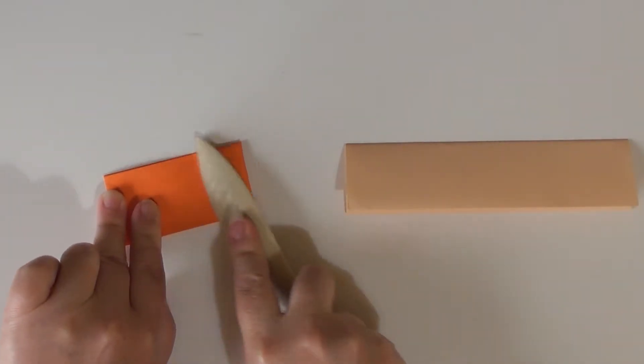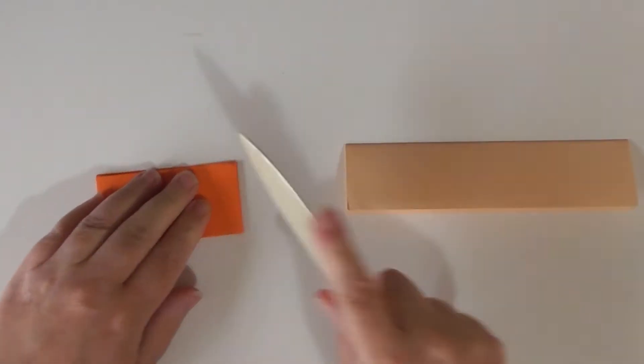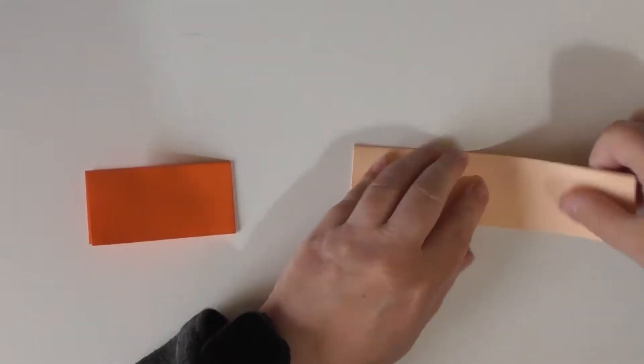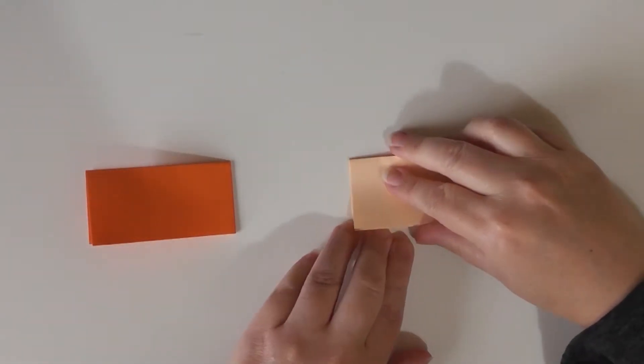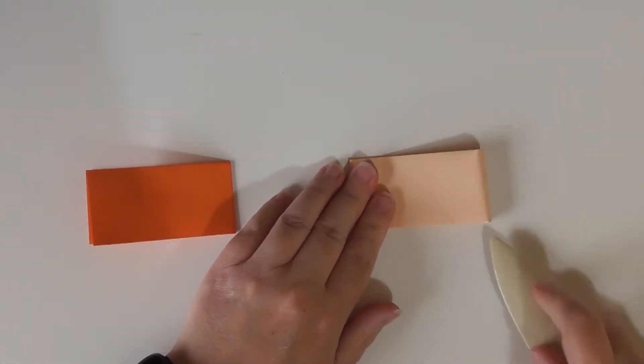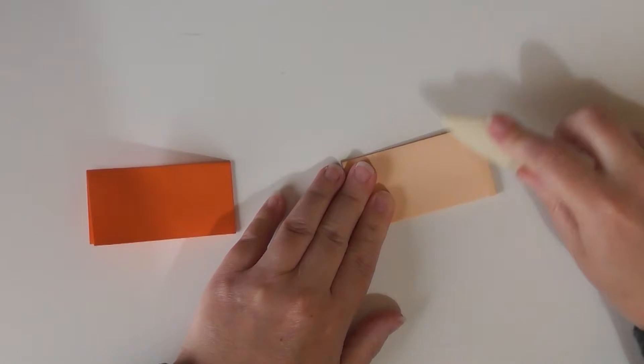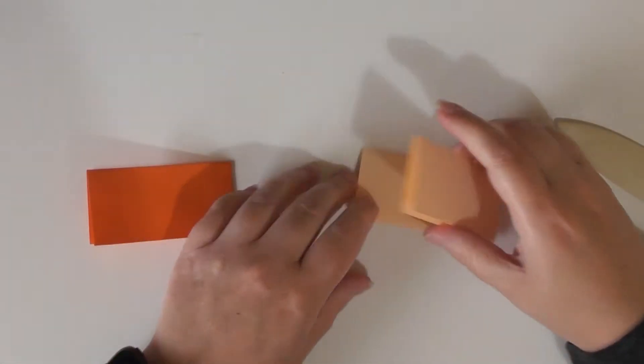But after this, we start doing mirror images. So, fold them in half. Open them back up.